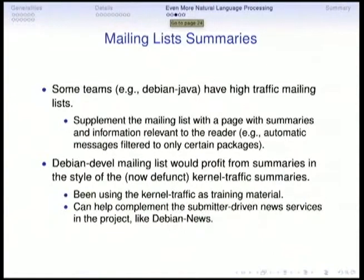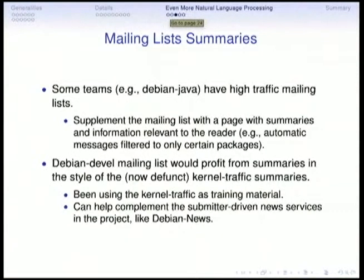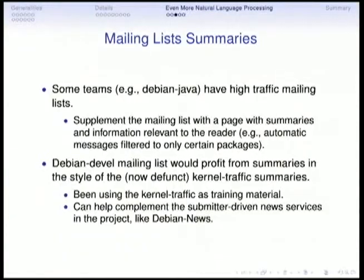The first thing I've been looking into: in Debian Java we have a mailing list with huge traffic and it's very difficult to keep up to date. The idea is to supplement the mailing list with a page of summaries and information relevant to the reader — for example, you maintain five packages so you only want to see messages related to those packages and just summaries of other discussions. Another similar idea is to make summaries for Debian Devel, in the same style as the kernel traffic summaries.